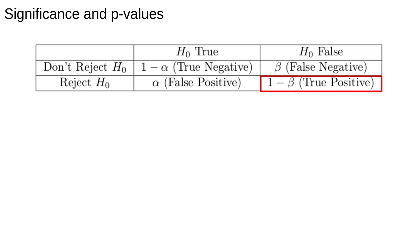Remember, rejecting the null is a positive result, an effect occurs. If the null hypothesis is false and we fail to reject it, that's a false negative. We've said there's no effect when there is.